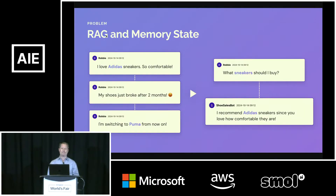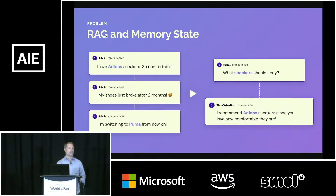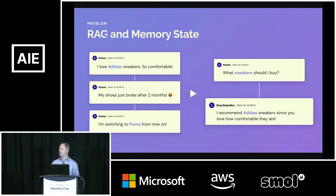Memory isn't about semantically similar content. RAG does that really well. And when I talk about RAG here, I'm primarily talking about vector database-based RAG, not necessarily graph RAG.